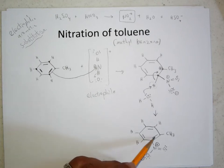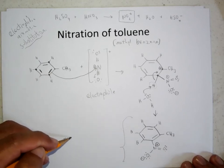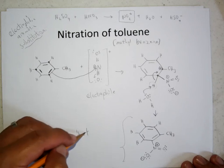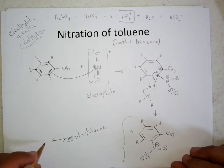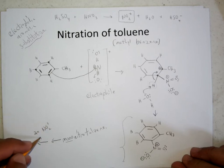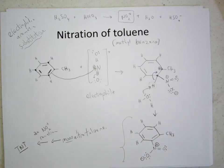The six-membered ring with three double bonds in it is aromatic. So now we have mononitrotoluene — and that should sound familiar to you because trinitrotoluene is TNT. So we can continue doing this: two more NO₂⁺ reactions would give us TNT.